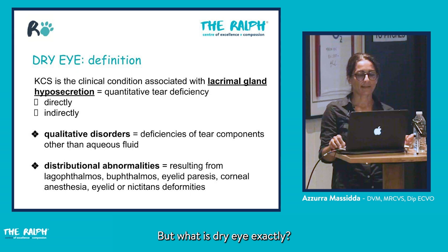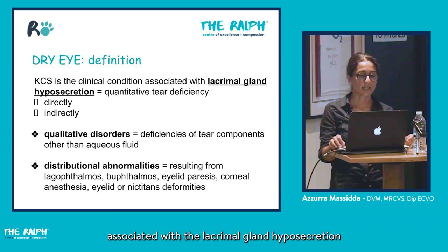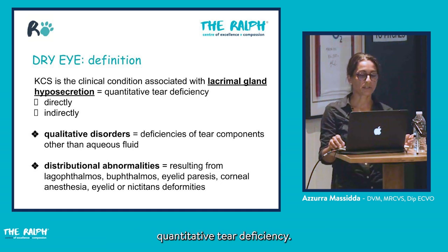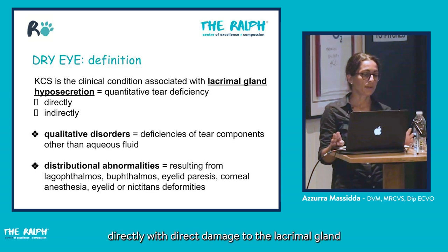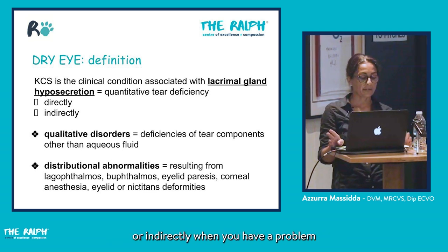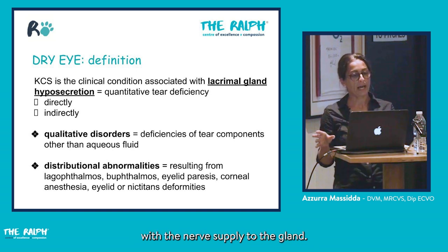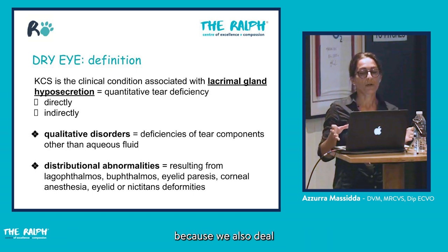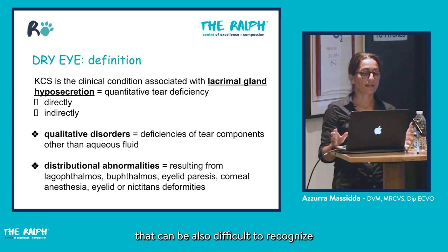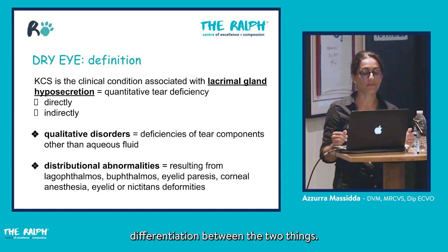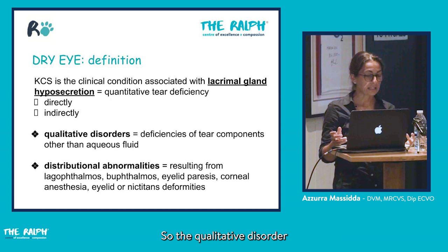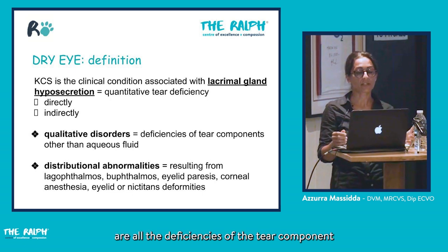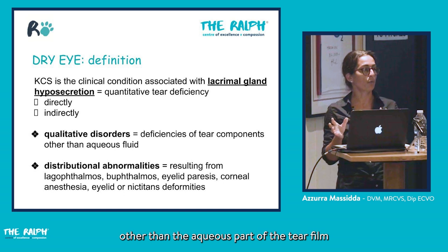But what is dry eye exactly? It is the clinical condition associated with lacrimal gland hyposecretion, which is also called quantitative tear deficiency. This can happen directly with direct damage to the lacrimal gland, or indirectly when you have a problem with the nerve supply to the gland.